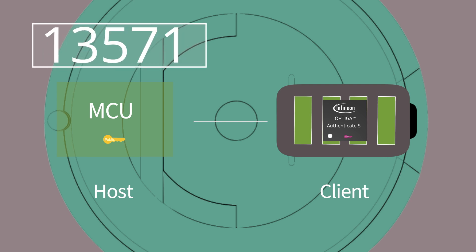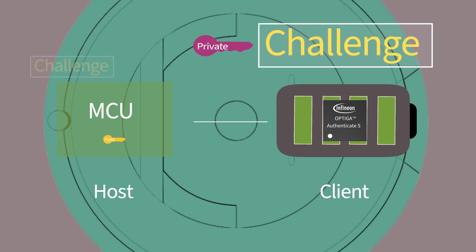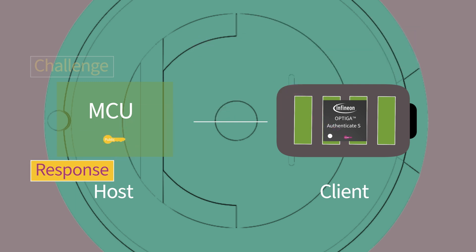The host then generates a challenge, which is derived from a unique random number every time, and sends it to the client. The client uses the trust anchor private key to generate the response to the client. If the response is correct, the host can work with the client.